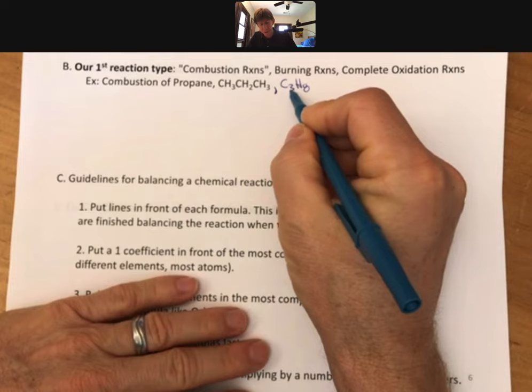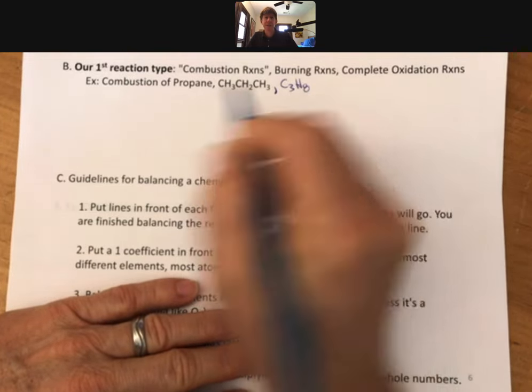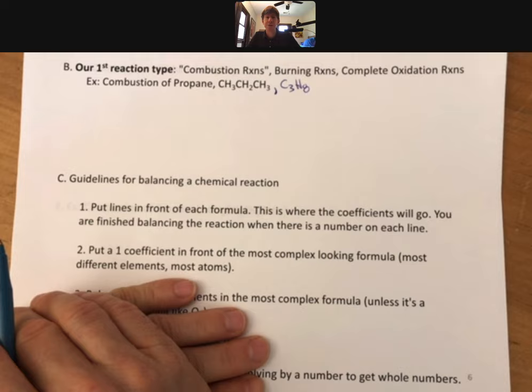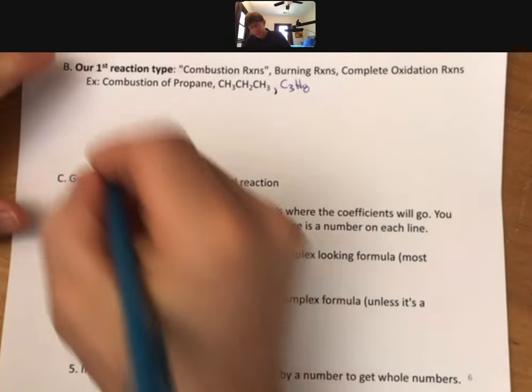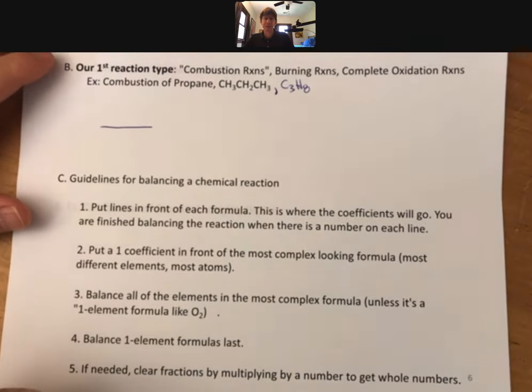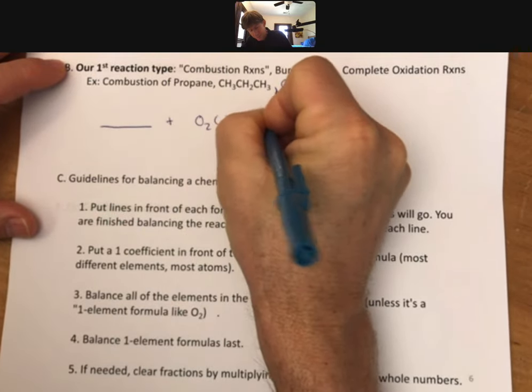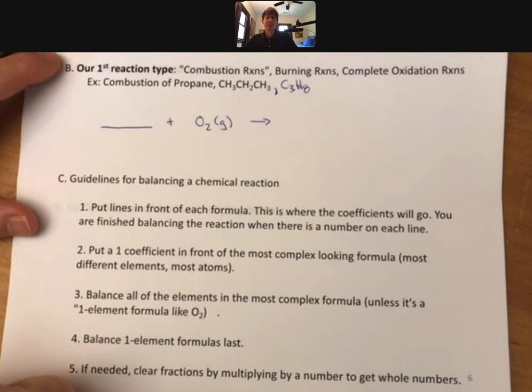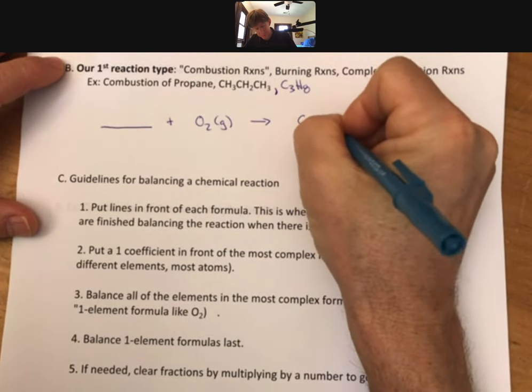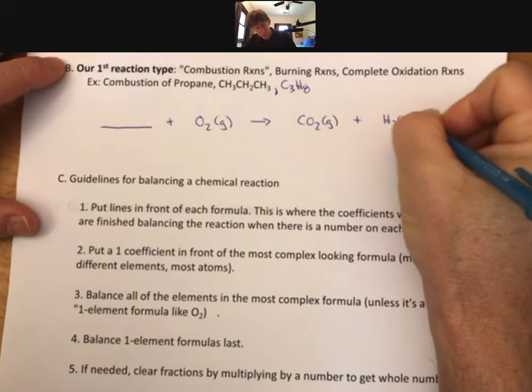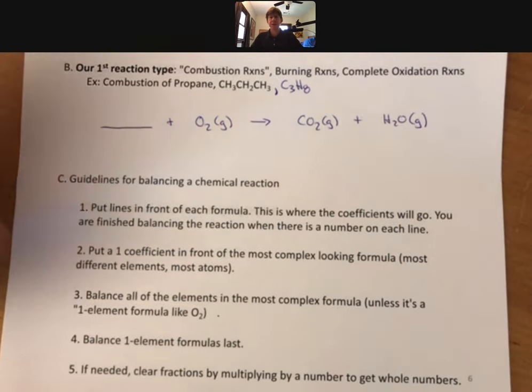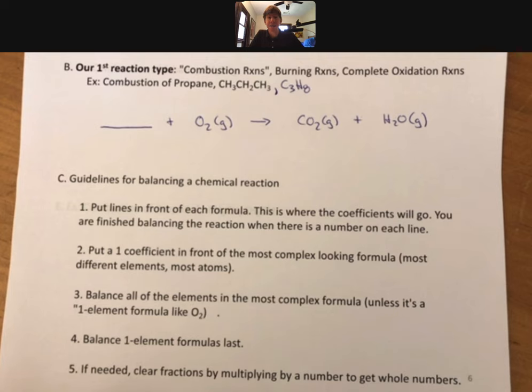We're going to gang up all the carbons and hydrogens into an empirical or molecular formula. This one's both. A combustion reaction is going to take whatever is being combusted plus oxygen and the products are going to be carbon dioxide and H2O. The H2O will be gas because this type of reaction typically gives off heat and that heat will be used to get the H2O into the gas phase.